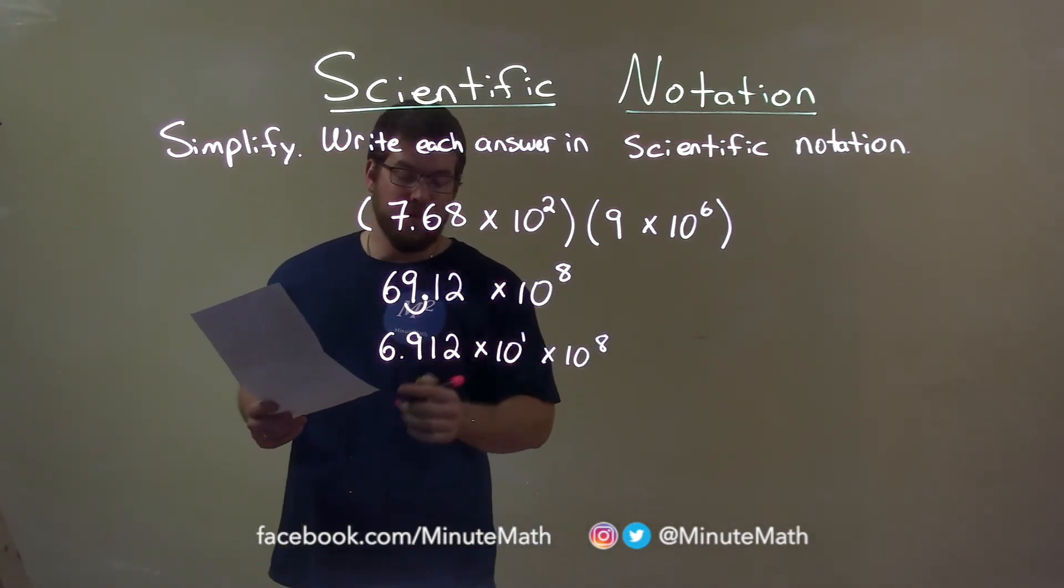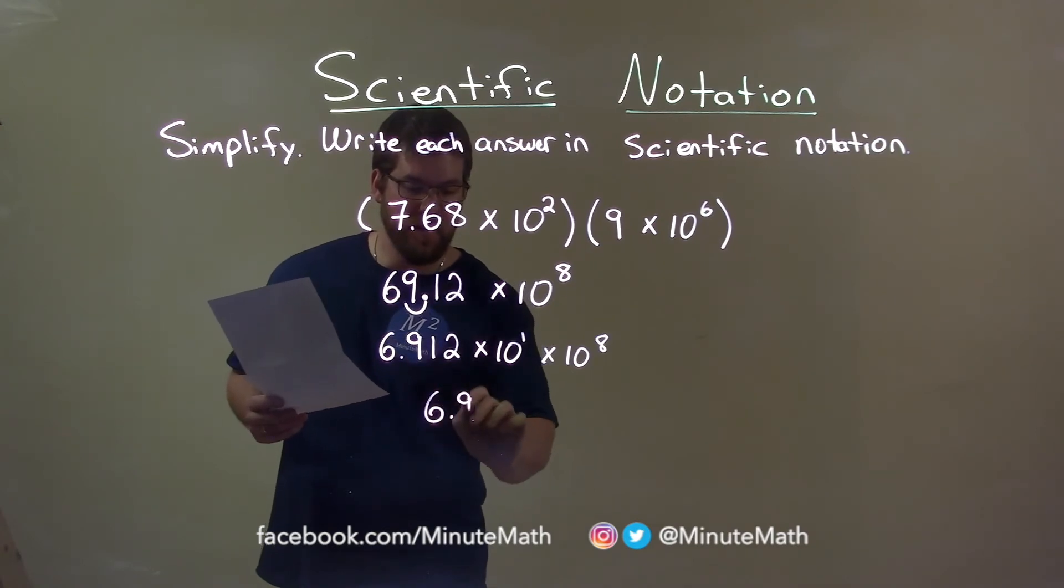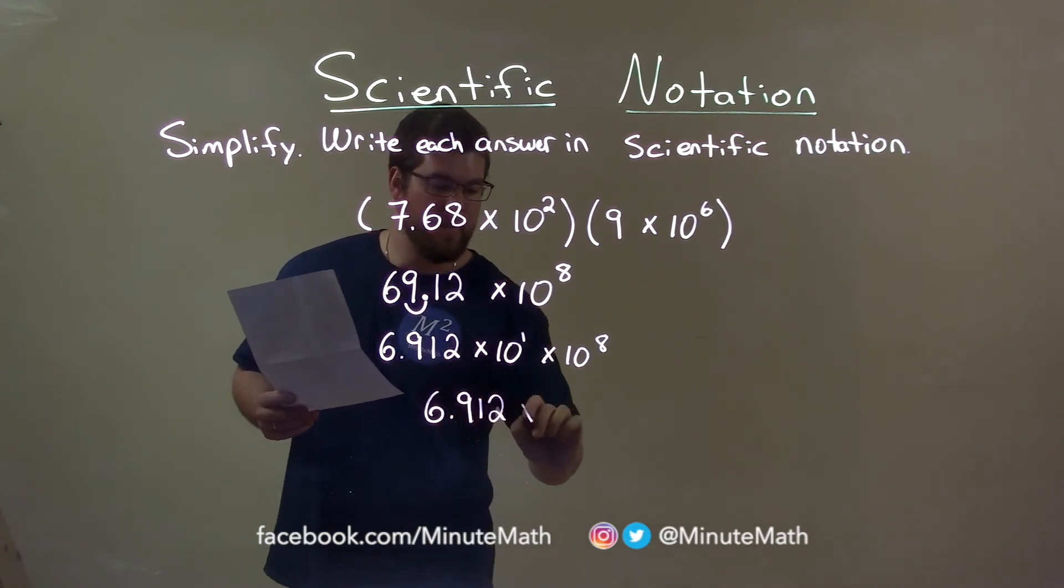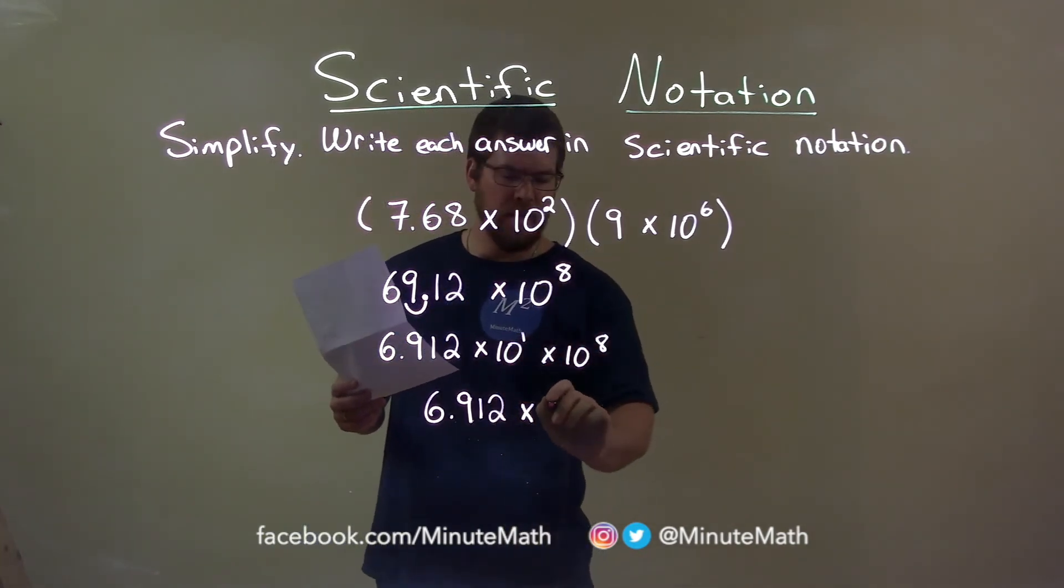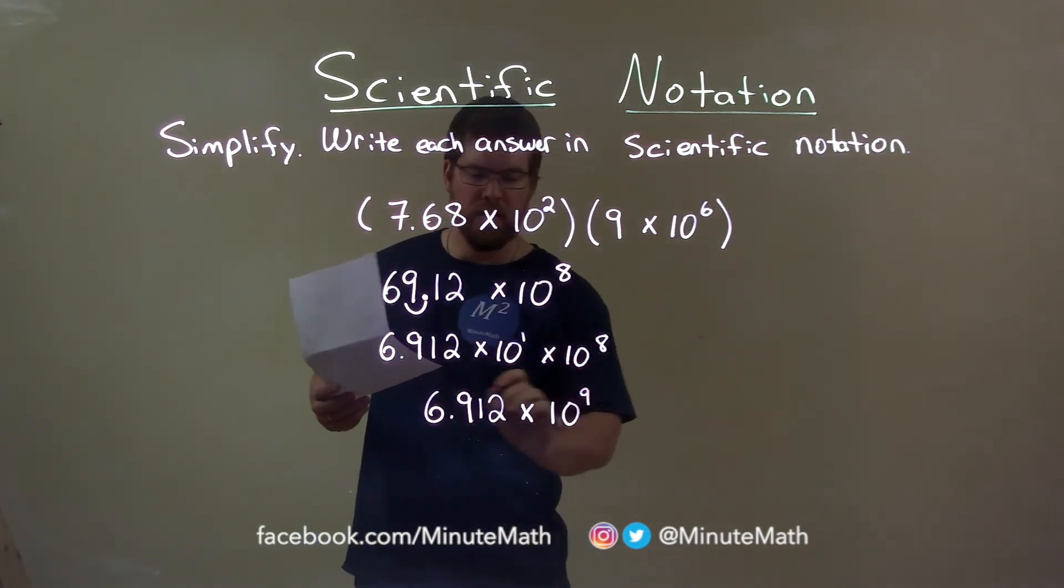Let's simplify. Well, the first number is still fine, 6.912. That's going to be multiplied by, let's add the exponents. 1 plus 8 is 9. So, we have 10 to the 9th power.